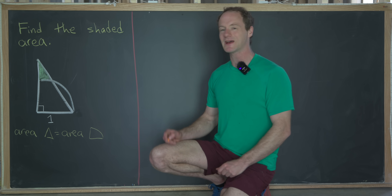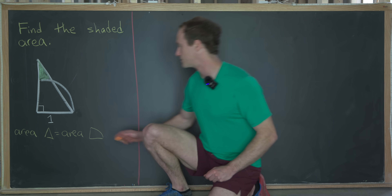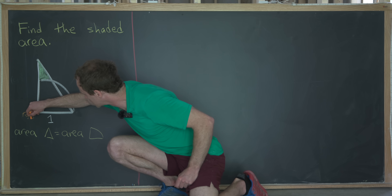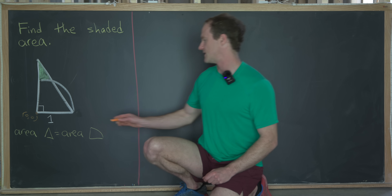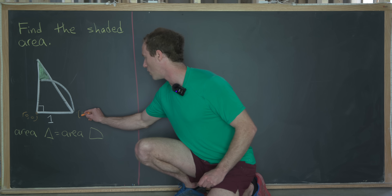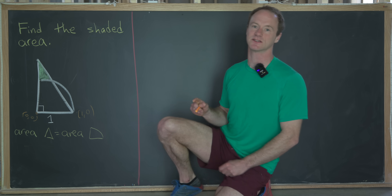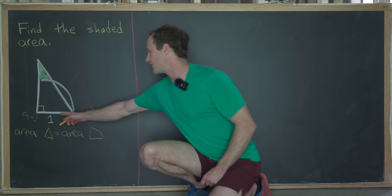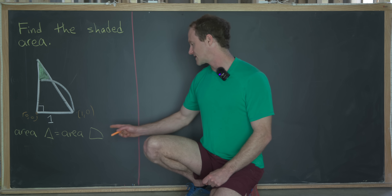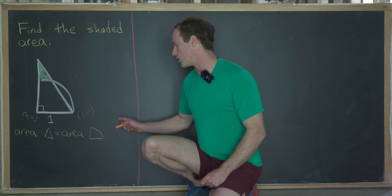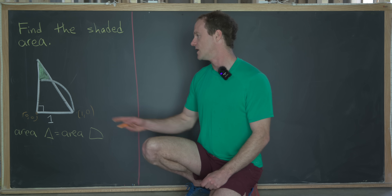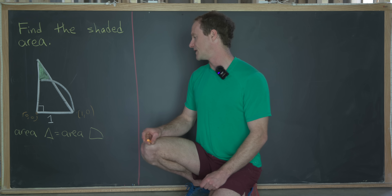So let's look at a solution. I'm going to introduce a coordinate system. I'll call this point right here the origin, so that'll be (0, 0). That makes this point right here (1, 0), because we're putting the x-axis as the horizontal axis. Now we just have to figure out the height of this triangle, which will follow from the condition that the area of the triangle equals the area of the quarter circle.